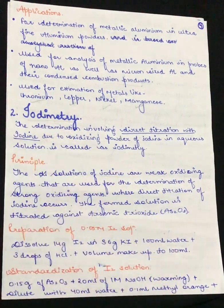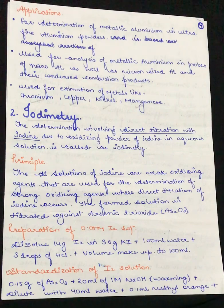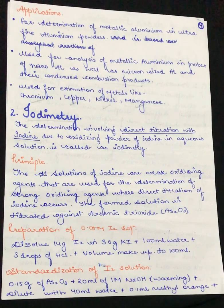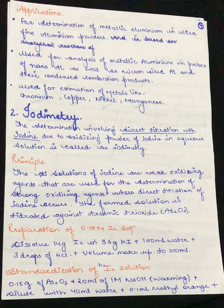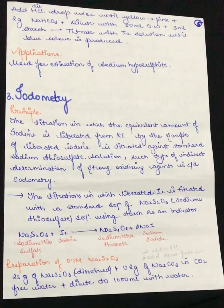Now let's see the standardization of iodine solution. We will take 0.15 grams of arsenic trioxide and add 20 ml of 1 molar sodium hydroxide. We will heat it if necessary, then dilute it with 40 ml distilled water. We will add 0.1 ml methyl orange as the indicator, then add dilute hydrochloric acid dropwise until the yellow color in the solution changes to pink.